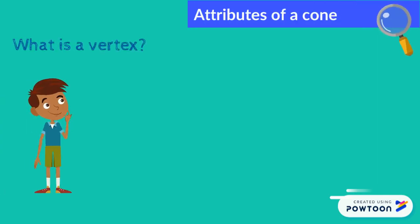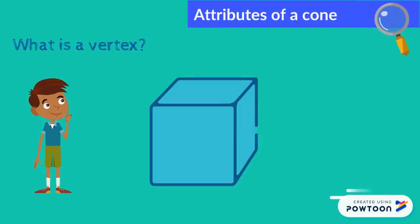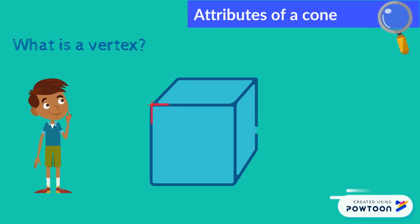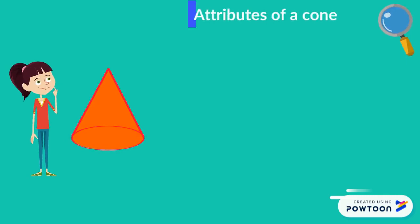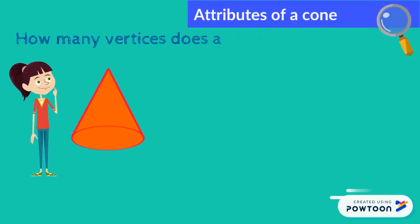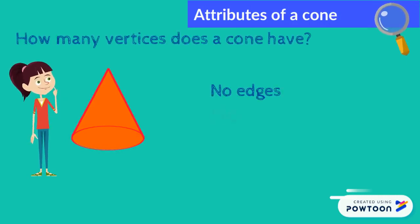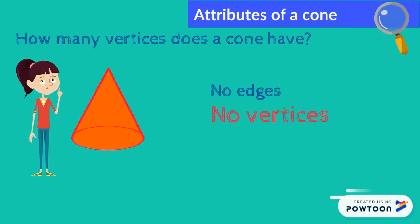Let us review what is a vertex. A vertex is created when two or more edges meet. Since the cone has no edges, it therefore has no vertices either.